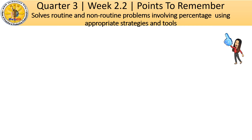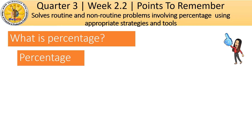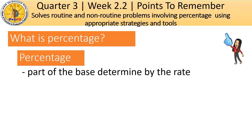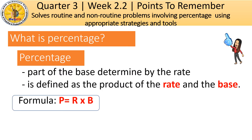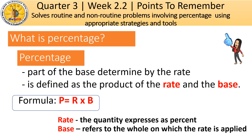Let us also define what is percentage. Percentage is a part of the base determined by the rate, and it is defined as the product of the rate and the base. The formula is P equals R times B, wherein P is for percentage, R is for rate, and B is for the base. When we say rate, it is the quantity expressed as percent, and base refers to the whole on which the rate is applied.